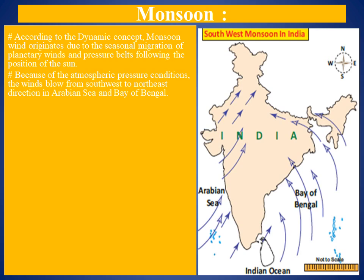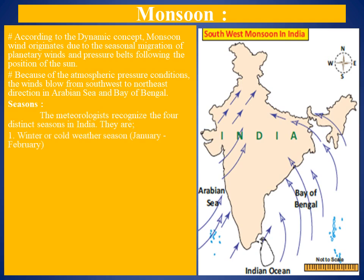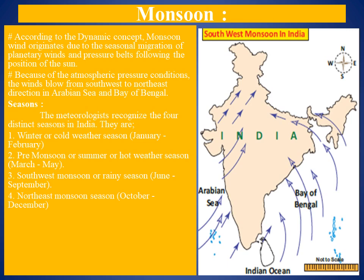The next sub-heading of monsoon is seasons. Meteorologists recognize four types of seasons in India. They are: the winter or cold weather season, which occurs in January and February; the pre-monsoon or summer hot weather season, from March to May; the southwest monsoon or rainy season, from June to September; and the northeast monsoon season, from October to December.